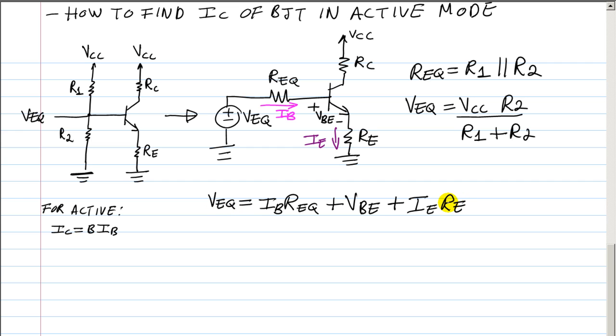VEQ is equal to this. Now what we need is to find IC. One of the formulas that we have for an active mode BJT is IC equals β times IB. We also have IE equal to IC times beta plus one over beta.